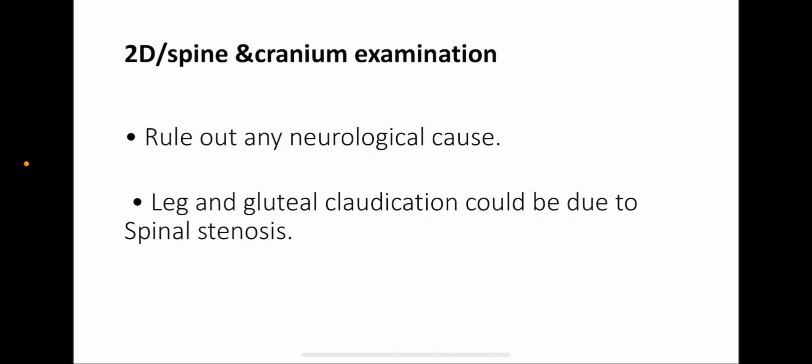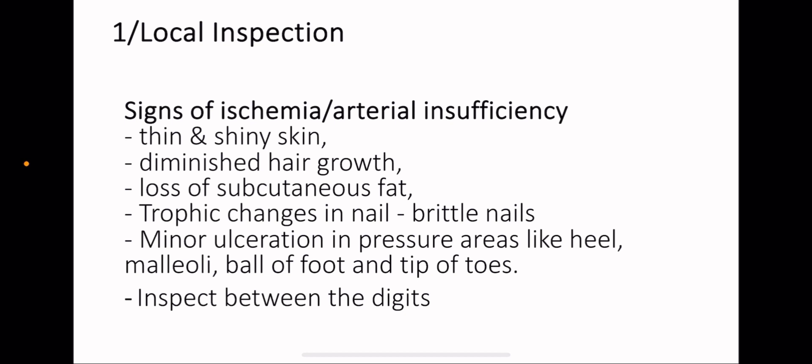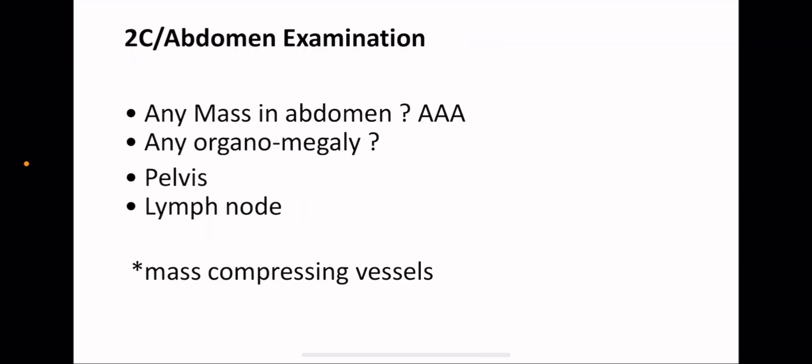The fourth system is spine and cranium examination, and this is to rule out any neurological cause. If there is leg and gluteal claudication, you should do spine and cranium examination. Why? Because one of the differential diagnoses of gluteal claudication is spinal stenosis. Not every patient in vascular who presents with claudication has a vascular problem, it could be a neurological problem. One of the clinical ways to differentiate between neurological claudication and vascular claudication is if you ask your patient: do you feel better by changing your position, for example leaning forward? If he feels better, this usually is spinal stenosis, it's a neurological problem. Vascular claudication due to vascular causes will not improve by changing position.